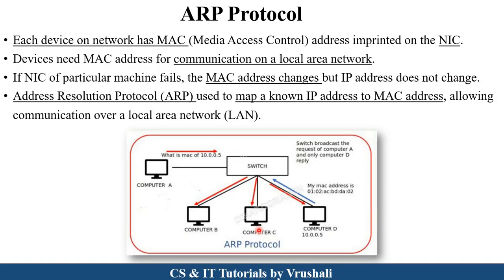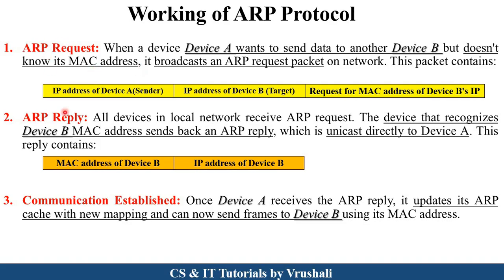Let's understand the working of ARP protocol — there are total three steps. The first is the ARP Request step. Suppose device A wants to send information to device B, but device A doesn't know the MAC address of device B. So device A sends an ARP request packet into the network. This ARP request packet contains the IP address of device A, the IP address of device B, and the request for the MAC address of device B. The second step is ARP Reply — device A broadcasts this ARP request packet into the network. All devices present in the network recognize this packet and send back an ARP reply to device A, containing the MAC address of device B and the IP address of device B. They send the reply unicast, or directly, to device A.